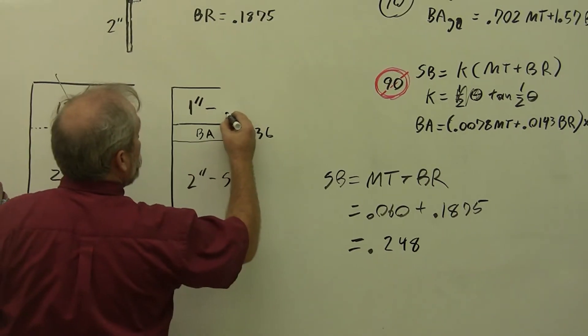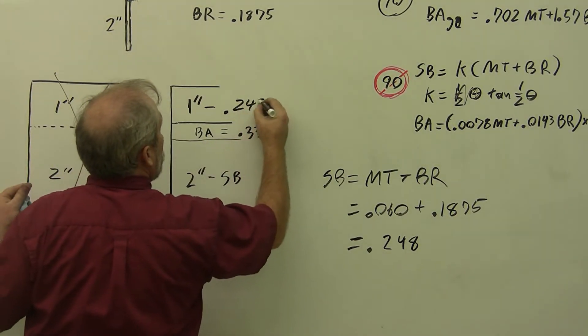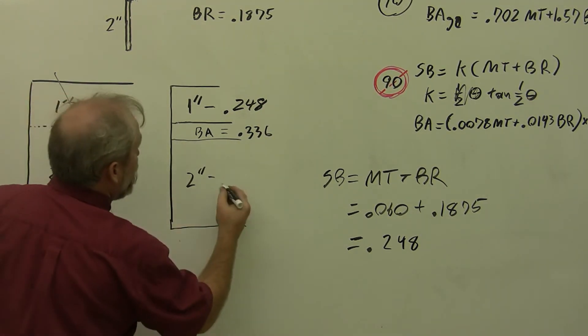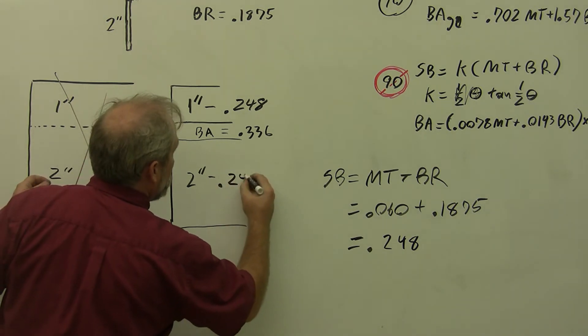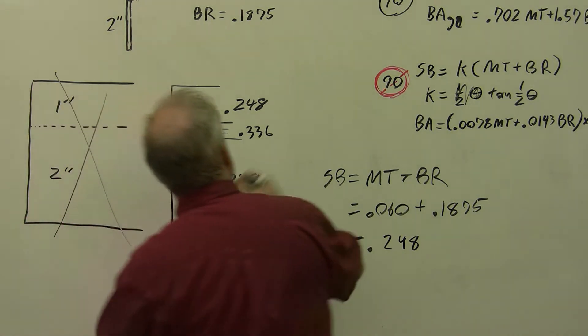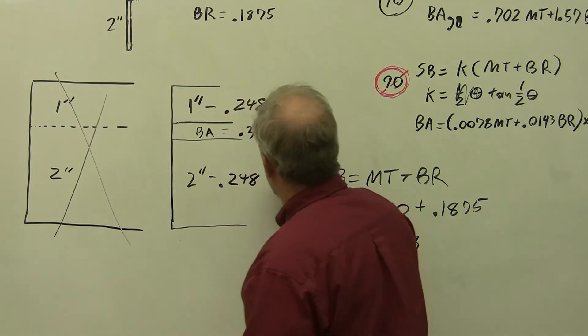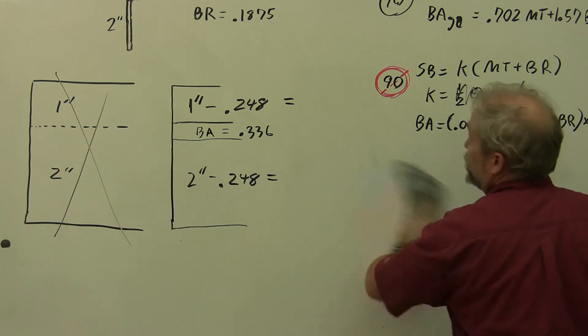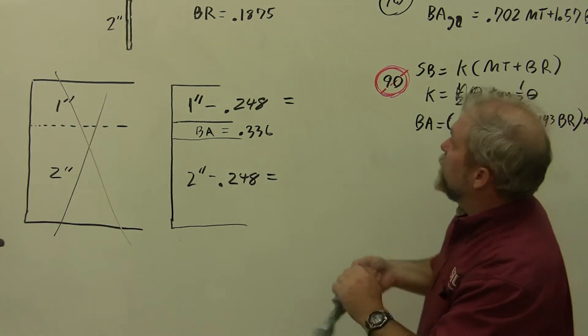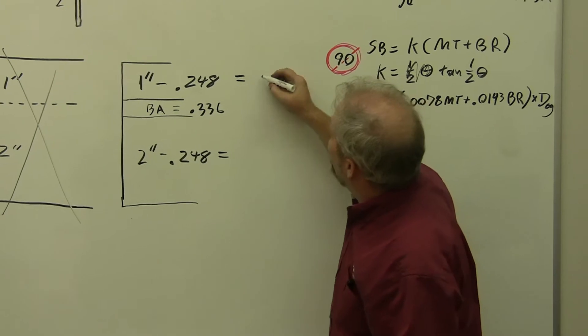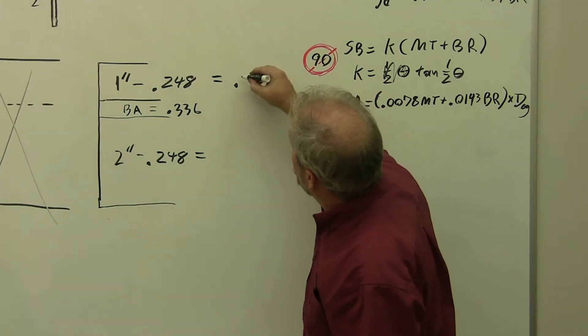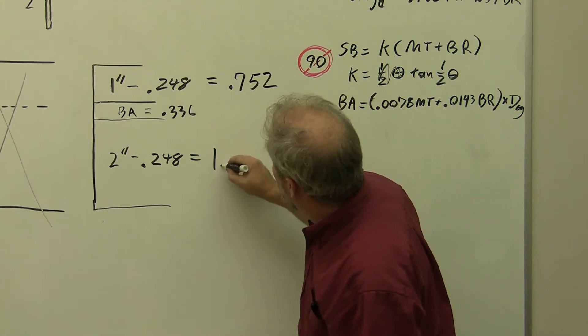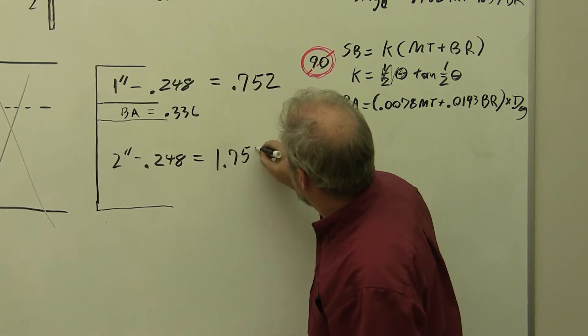1 minus 0.248. 2 minus 0.248. And now we're going to do our math to find out what each of these values are. Give us a little more room to work over here, because these things get pretty big. You go through a lot of paper when you do the problems. That is 0.752. And this is 1.752.